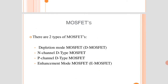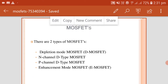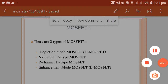There are two types of MOSFET: depletion mode MOSFET (D-MOSFET) and enhancement mode MOSFET. The D-MOSFET has two subtypes: N-channel D-type MOSFET and P-channel D-type MOSFET. We will discuss each type of MOSFET one by one.